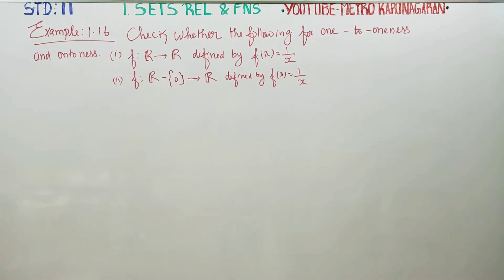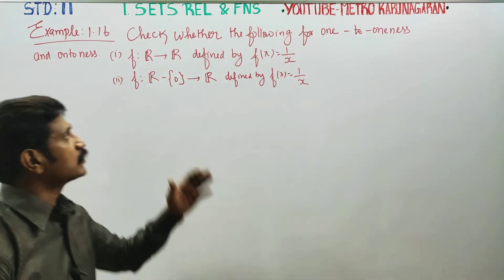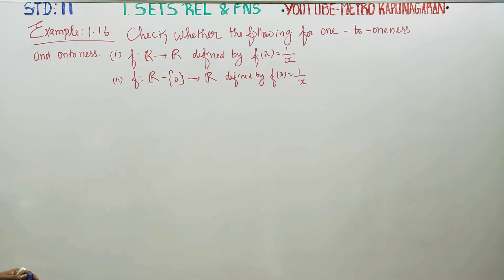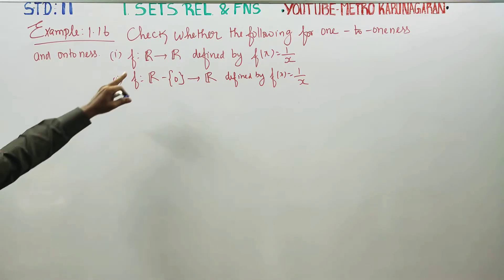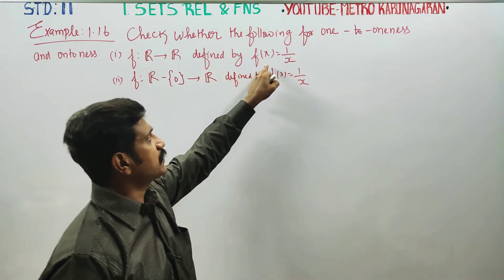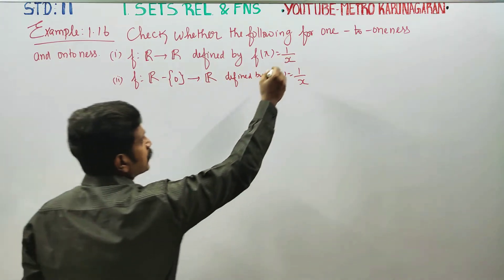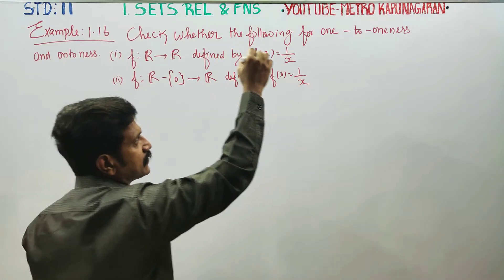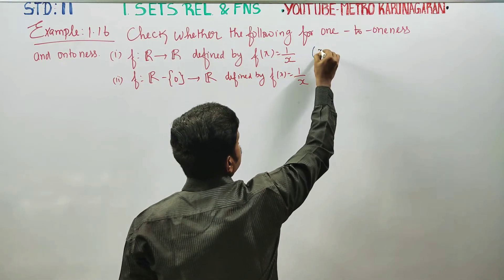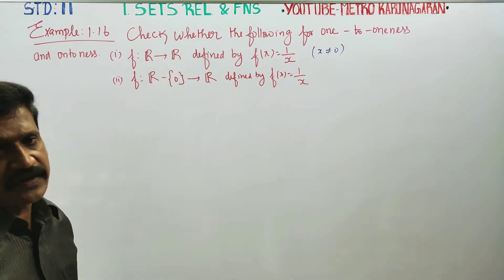Dear students, in example 1.16, check whether the following is a one-one function or onto function. The first function is defined by f(x) = 1/x. If we have a denominator x = 0, then 1/0 is not defined in mathematics.